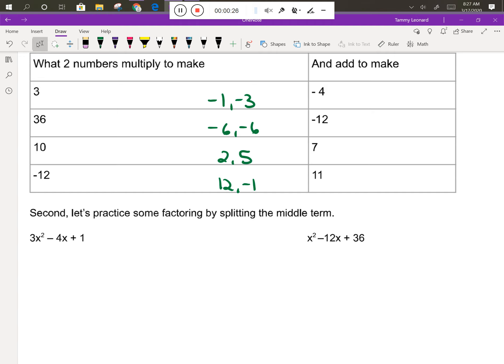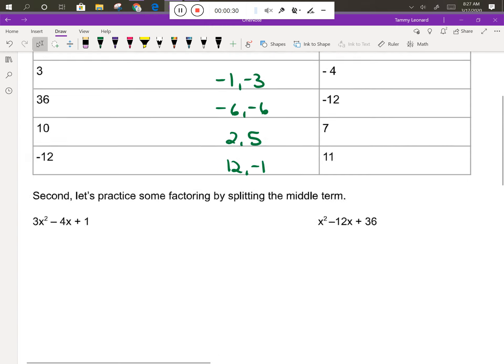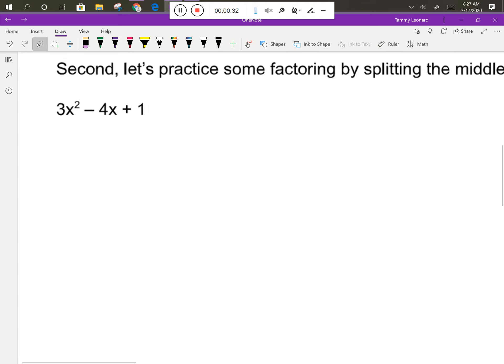Let's tackle the first factoring problem: 3x² - 4x + 1. So first we need to figure out what's the puzzle. I look at the 3 and the 1, and that tells me I'm looking for a number that multiplies to make 3 and adds to make -4.